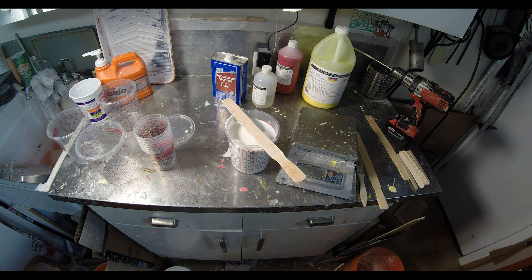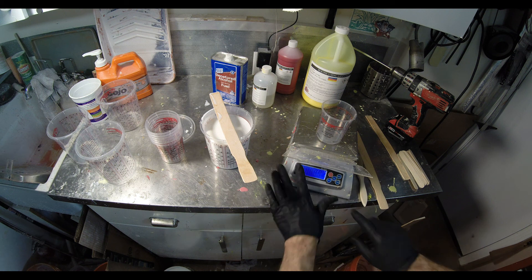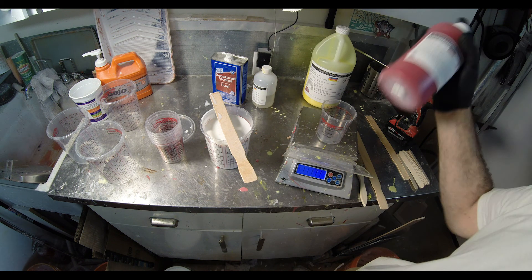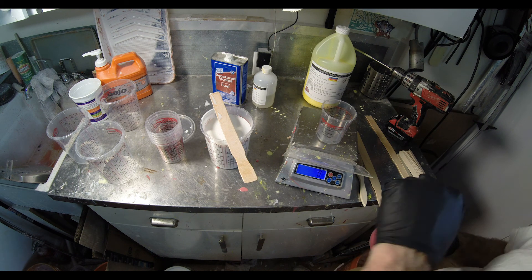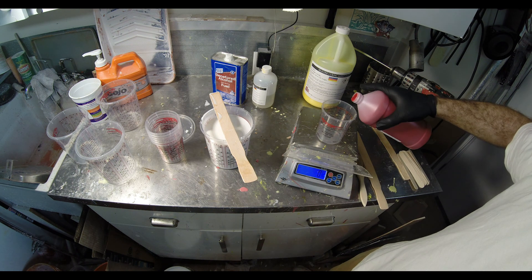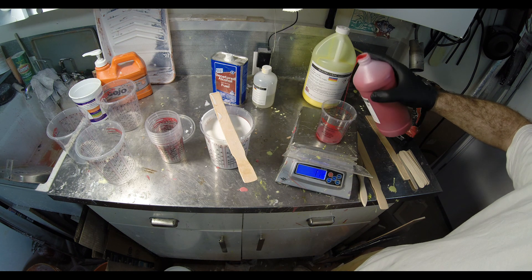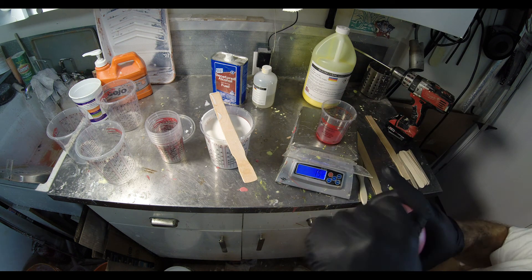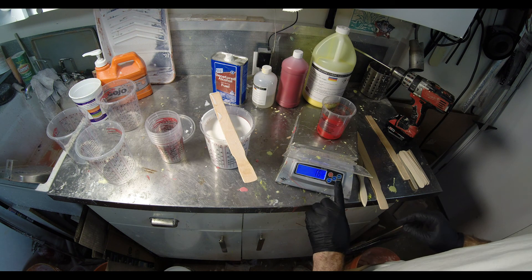Now I'm going to mix up some GT 6142 and I always start by zeroing my scale, shaking my catalyst to make sure it's mixed well and then I pour the catalyst into my mixing cup first. The ratio is ten to one so I'm measuring out the appropriate amount and then I swirl it around a little bit to coat the sides of my container.